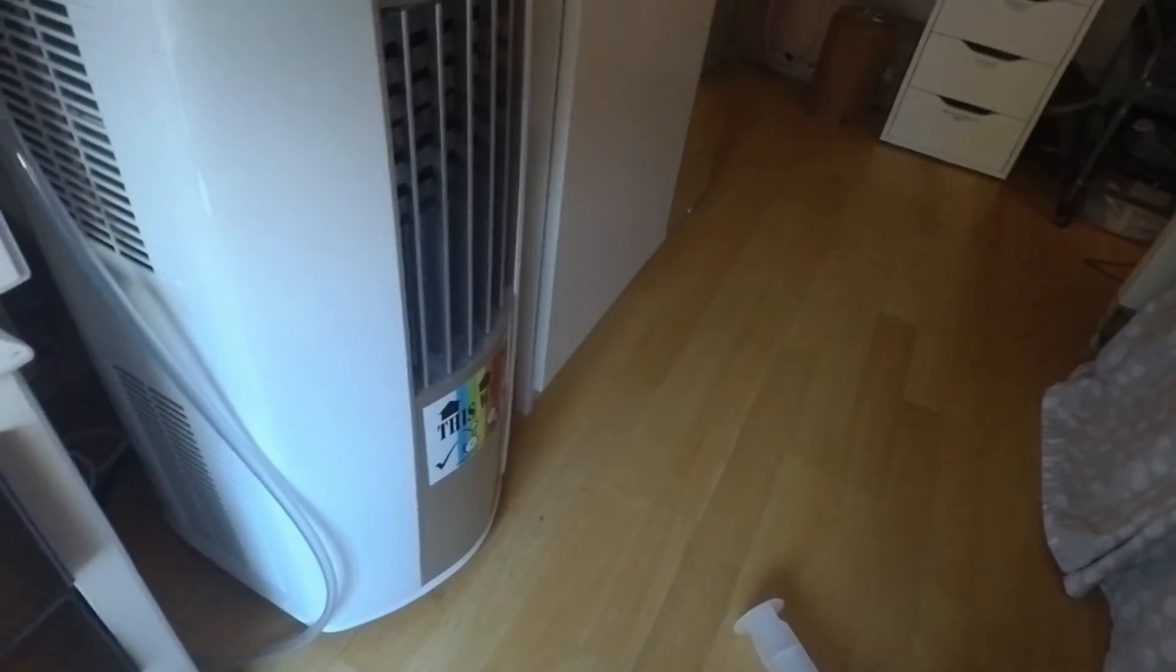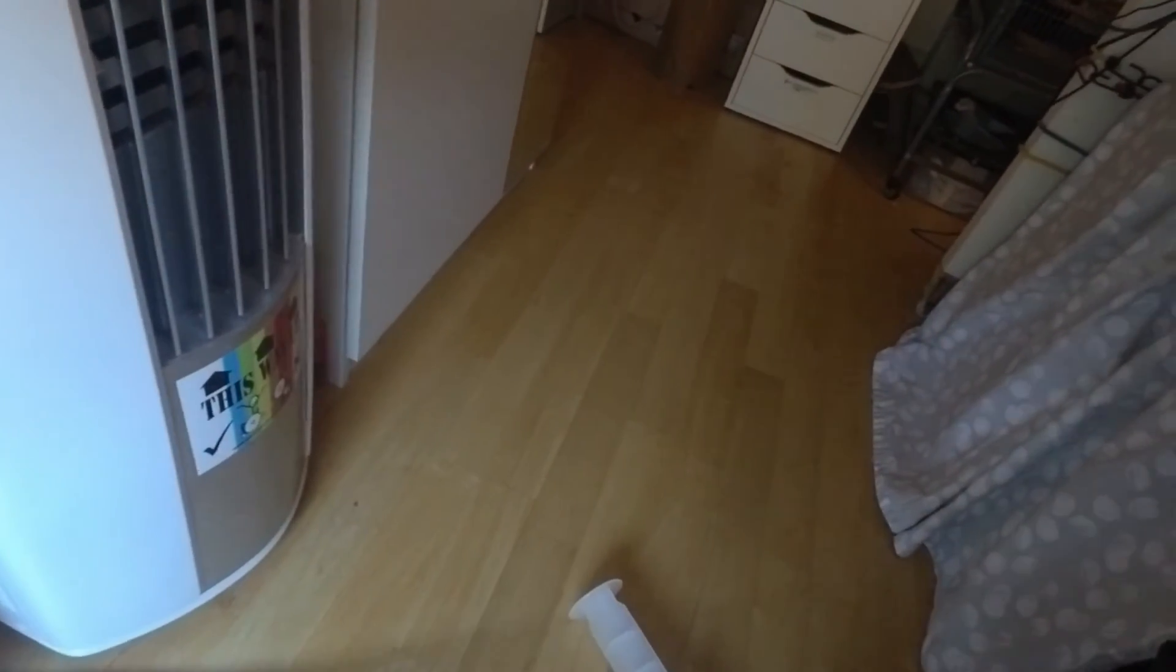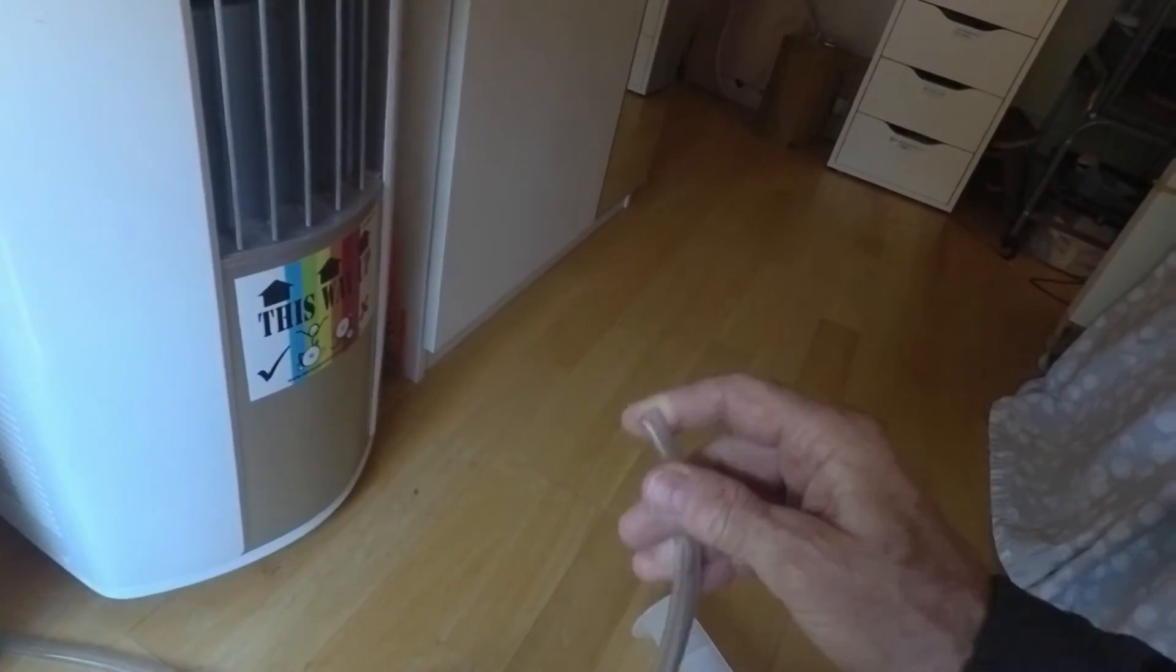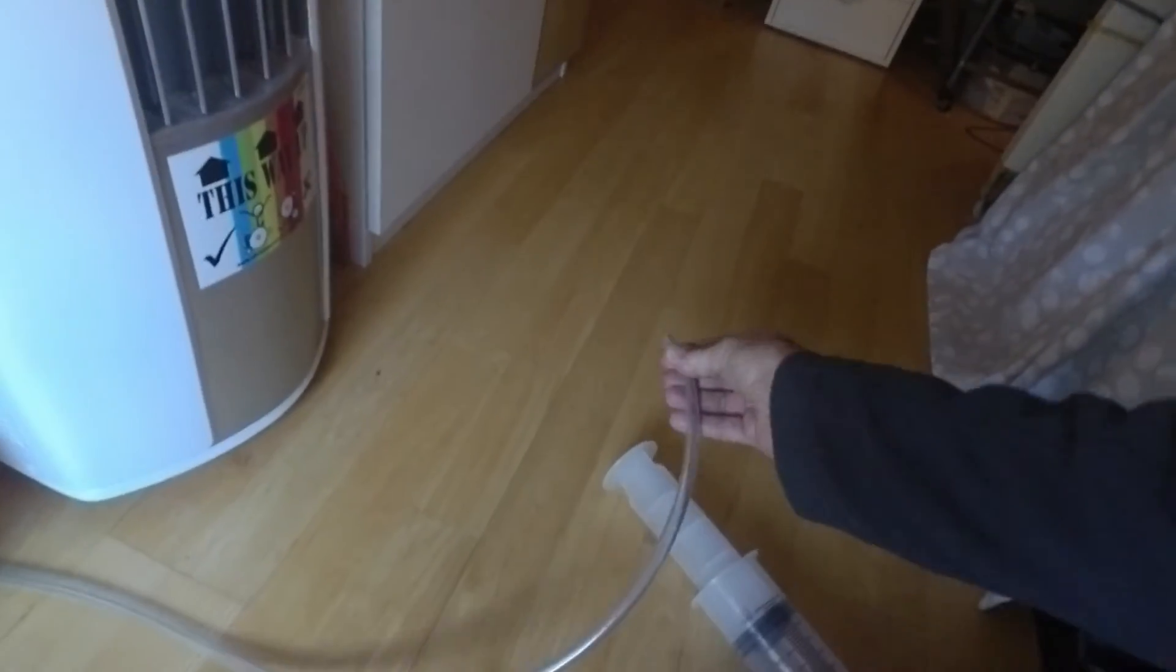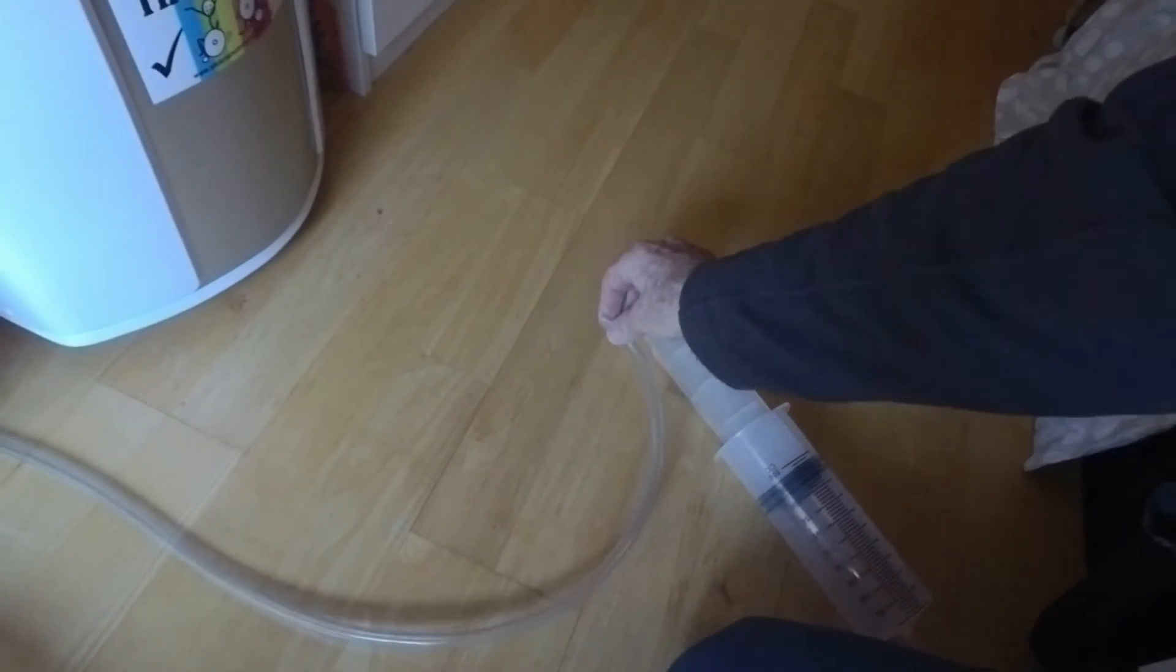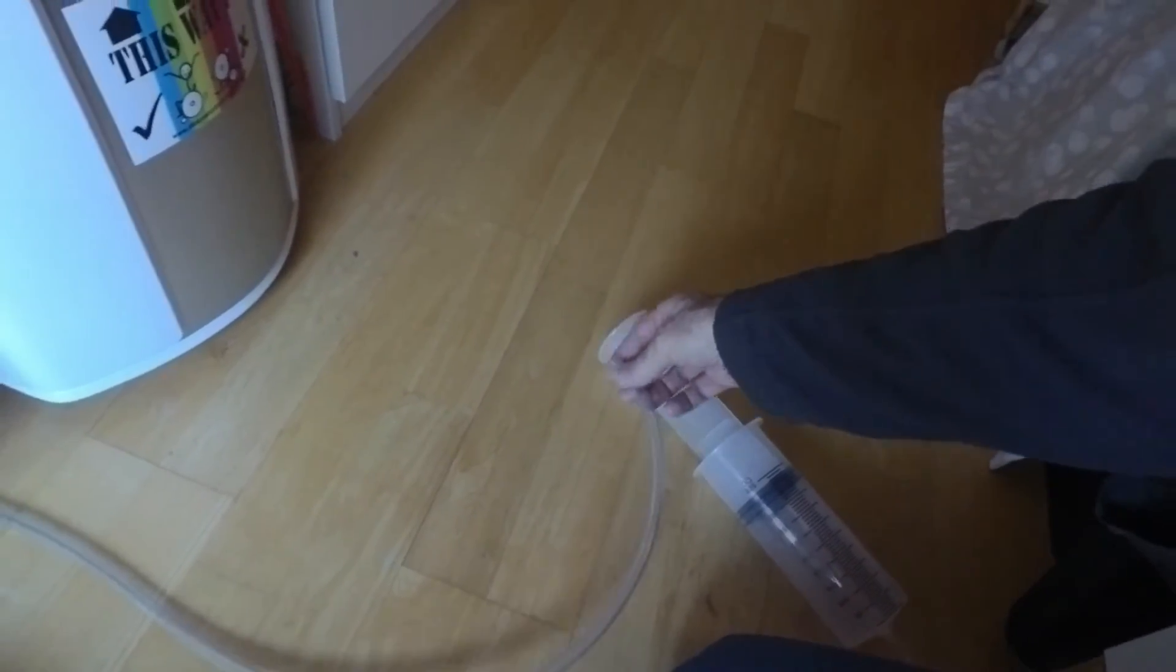But there is a drain hose. So this one, I've actually extended the hose, but it comes out the back and lets you drain the condensate out. The trouble is, this is so low to the floor that you end up using a tray or something really shallow, and it's just really difficult.